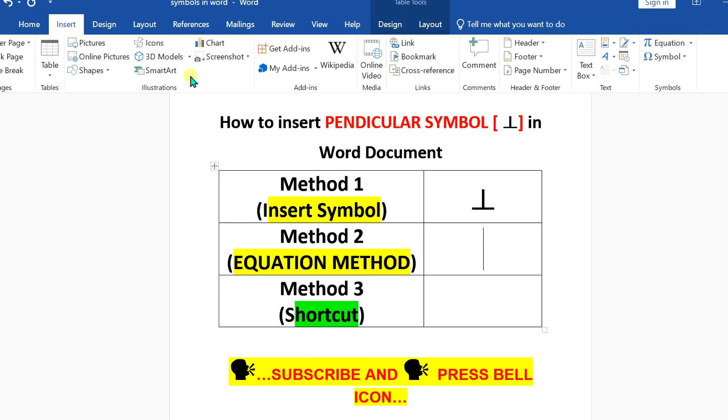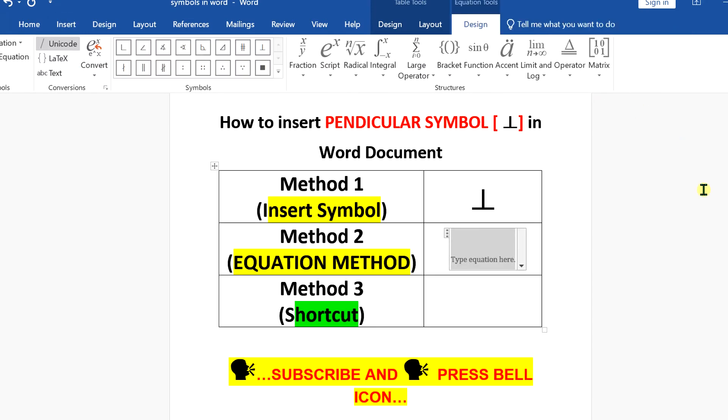Now, the next method is also easy. Under the Insert option, click on Equation. Press backslash on your keyboard, type P-E-R-P, and press spacebar to insert the perpendicular symbol.